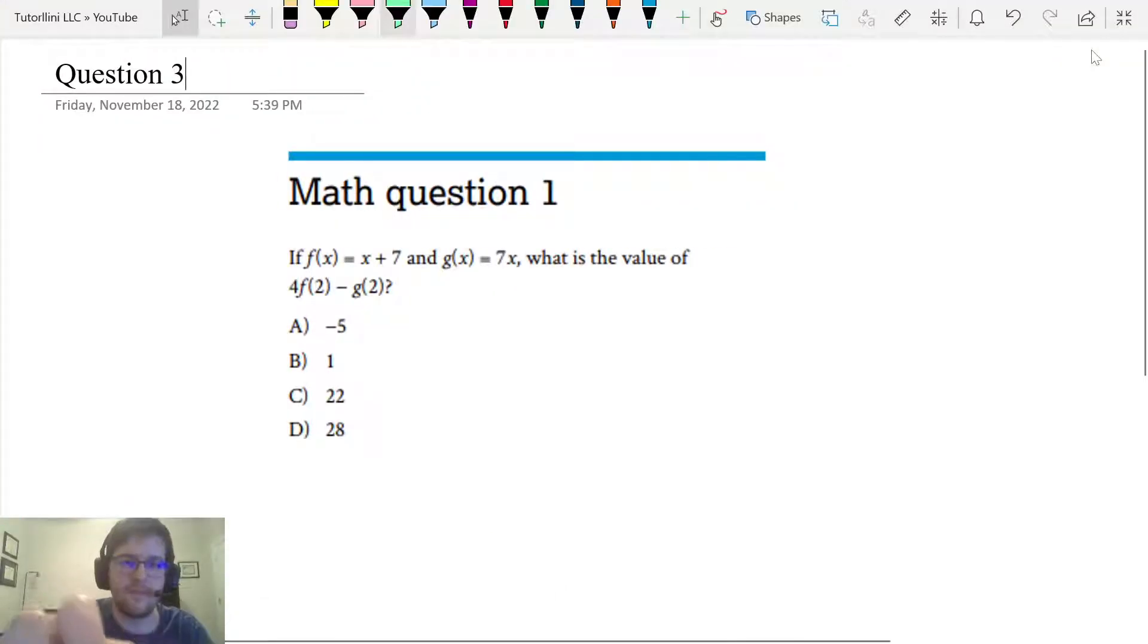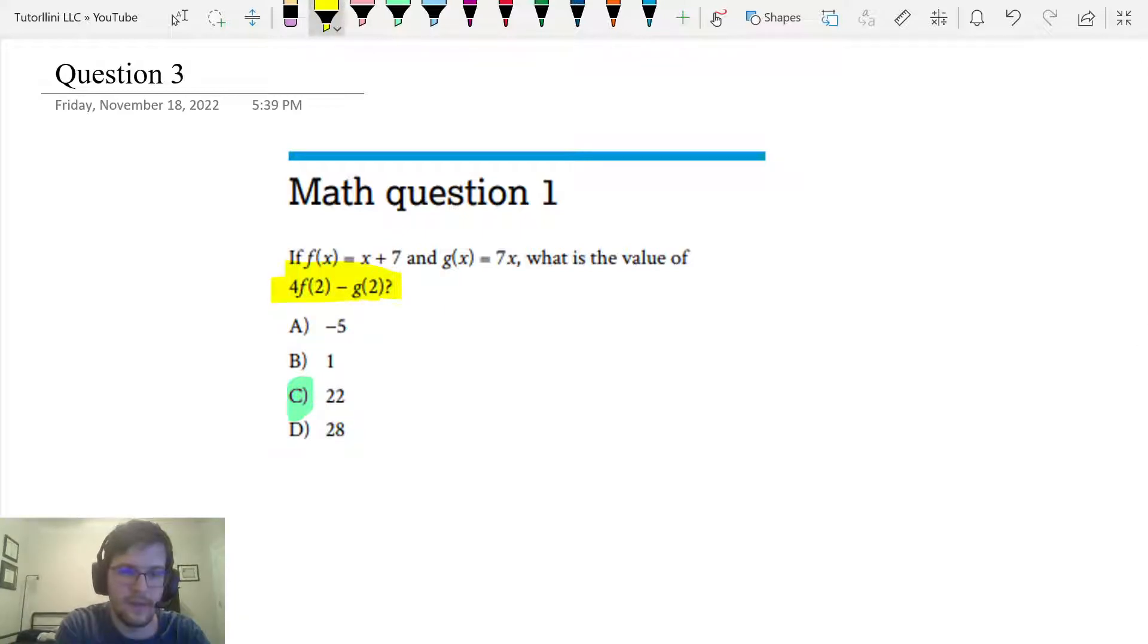So let's go and lock in answer C because that is 22. So 4f of 2 minus g of 2 was 22. Great. So you see for this question, that saved us at least a little bit of arithmetic. So we could have gotten the answer probably slightly faster and more reliably than if we did it by hand or if we typed it into a calculator without using this method.